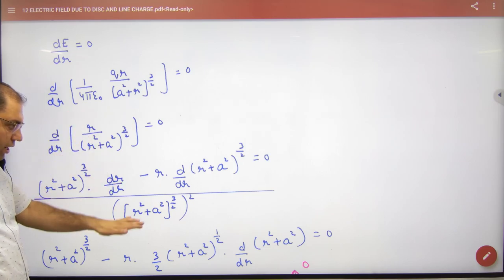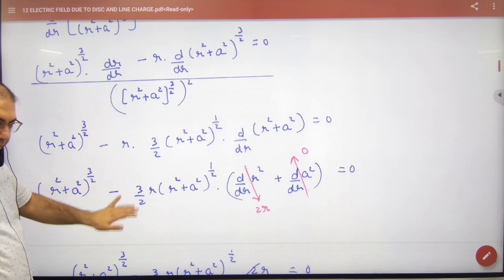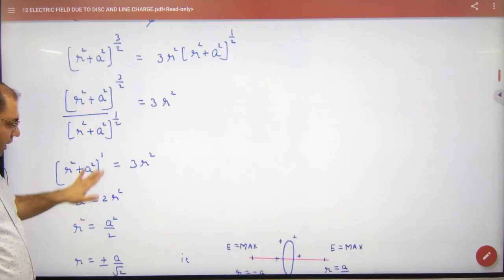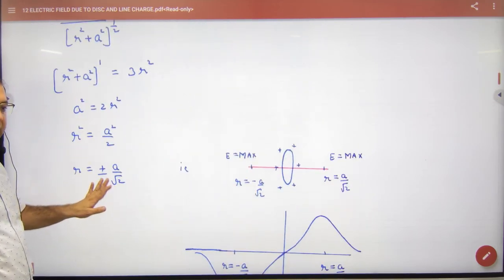If we put the formula of u by v, solve it, you will have the answer, plus minus a by root 2.